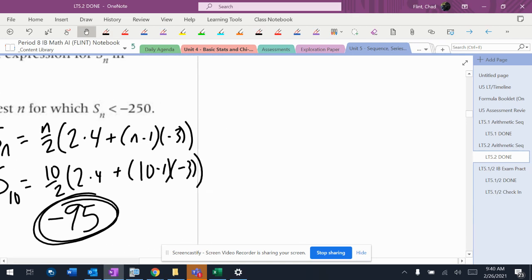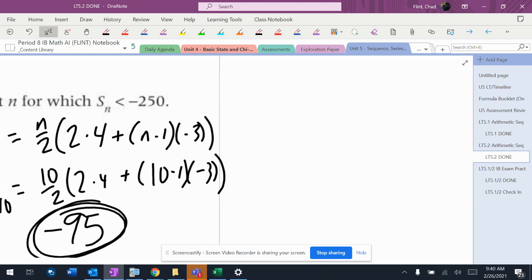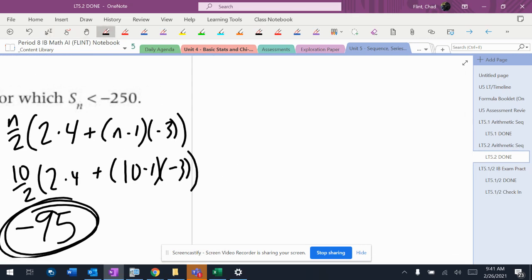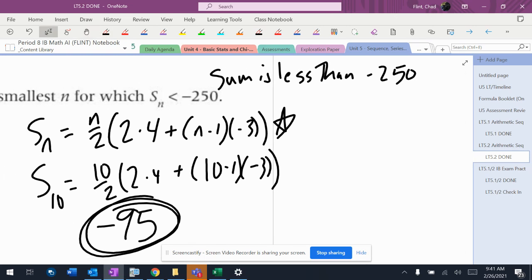So now part C says how many terms can I have? So what's the smallest n? So how many terms can I have so that the sum is less than negative 250? So it wants to know this formula right here, how many, what's the biggest n I can put in so that the sum is not 250 or more?